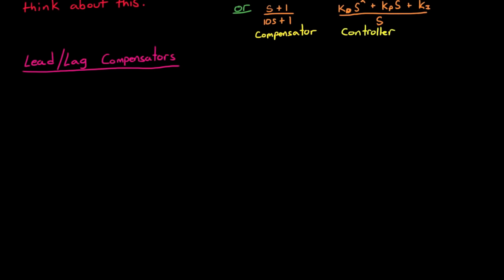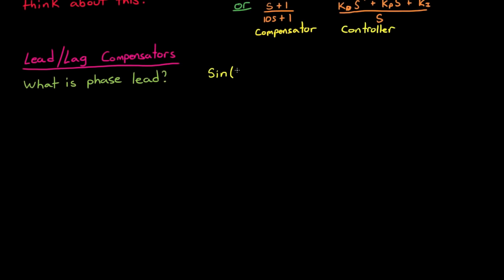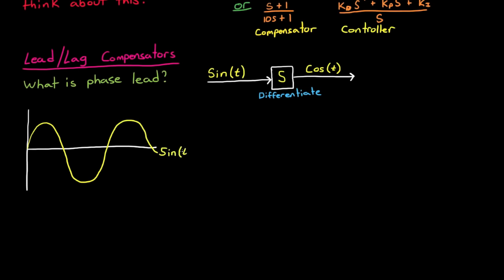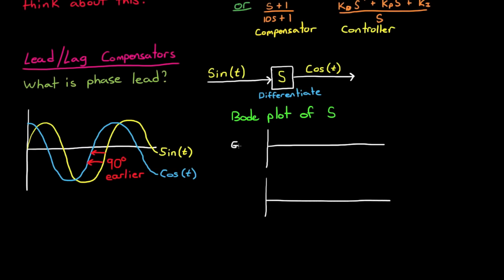You can probably tell from the name that phase lead and phase lag compensators lead and lag phase, but what does that mean exactly? Well, let's look at phase lead. If you start with a sine wave input and then you differentiate the signal, we get a cosine wave signal out at the exact same frequency. And then if we plot both the input and the output on the same graph, it's easy to see that the cosine signal is in front of the sine signal by 90 degrees. Another way of thinking of this is that the output leads the input by 90 degrees. And we can plot the transfer function, s, on a Bode plot, and you can see that the phase is positive 90 for all input signals. Check out my videos on sketching Bode plots by hand if this isn't familiar to you.